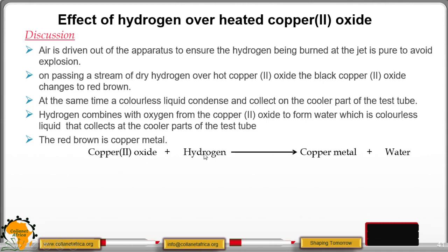This is the word equation. We have copper oxide plus hydrogen to give us copper metal plus water. This is the equation. Copper oxide is a solid and it's black in color. We have the hydrogen gas, which is a colorless gas.